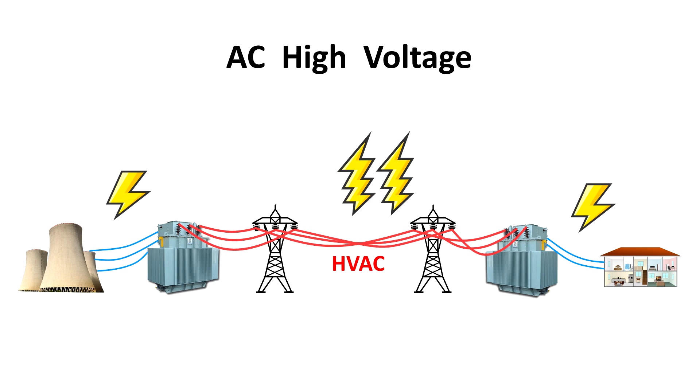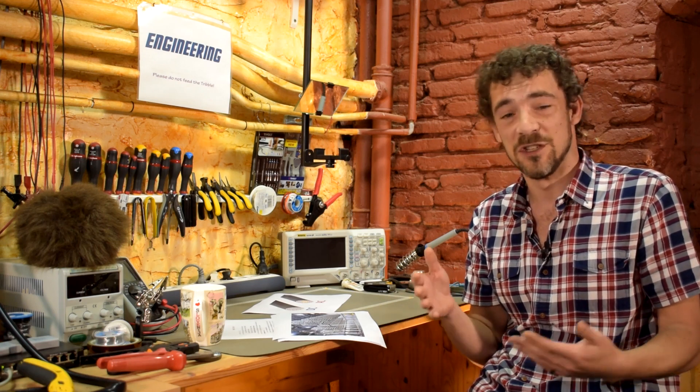So basically, you feed the power into the transformer, that kicks the voltage up, it goes across the power pylons. And on the right hand side, eventually, you're going to pass that high voltage AC through another transformer to step the voltage back down, and the current up, and then you can power your cute little house there. Of course, with AC, you can simply use these transformers and kick the voltage up. But how exactly does high voltage DC work?